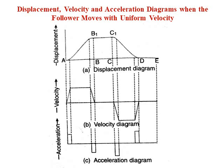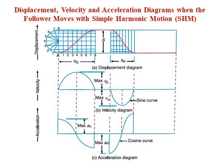This is the displacement diagram, velocity diagram, and acceleration diagram when the follower moves with uniform velocity. Whenever we solve a problem, they will clearly mention whether the follower is moving with uniform velocity, simple harmonic motion, or any other motion — and based on that we will draw the curves. Coming to the next type: simple harmonic motion.